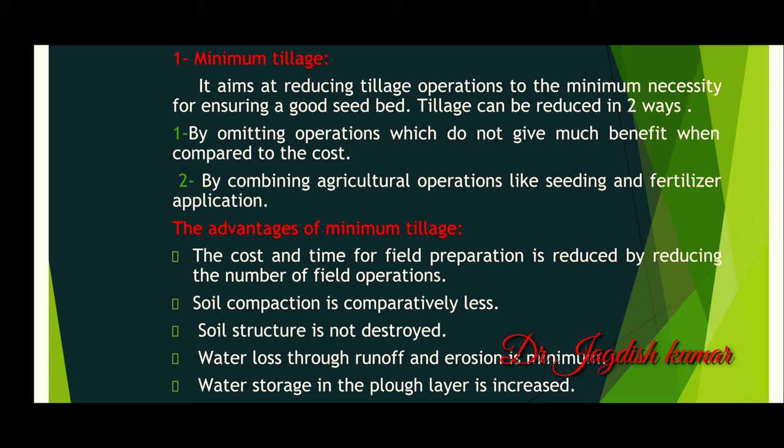The advantages of minimum tillage are: 1. The cost and time of field preparation is reduced by reducing the number of field operations. 2. Soil compaction is comparatively less. 3. Soil structure is not destroyed. 4. Water loss through runoff and erosion is minimum. 5. Water storage in the plow layer is increased.